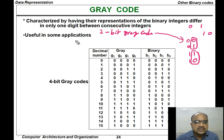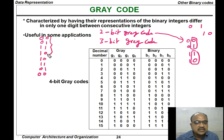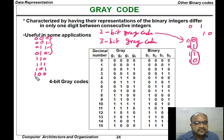The 2-bit Gray code is: 00, 01, 11, 10. Using this 2-bit Gray code, we can generate the 3-bit Gray code. We take the original 2-bit Gray code and consider its reverse order from bottom to top: 10, 11, 01, 00. We embed 0s for the original and 1s for the reversed entries.